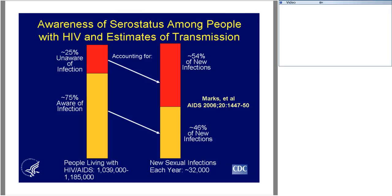This graphic looks at awareness of serostatus — whether people are aware they are HIV positive — among people with HIV and how that relates to transmission estimates. It's estimated that about 25% of people are unaware of their HIV-positive status, and those 25% are responsible for approximately 54% of new infections. The 75% who are aware of their serostatus are responsible for about 46% of new infections, meaning a small number of people with HIV account for a larger proportion of new infections.